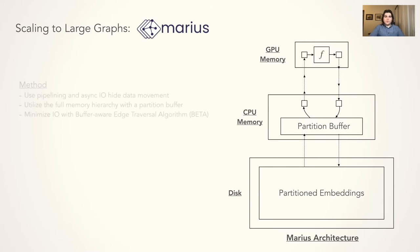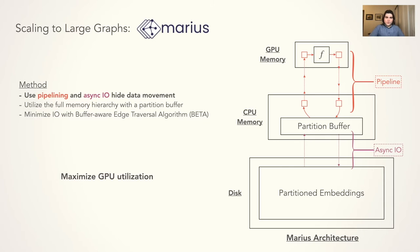Here we can view our contributions in the context of the MARIUS system architecture. We use pipelining to saturate the GPU with batches of edges and embeddings from CPU memory. We also use asynchronous I/O to prevent any wait times due to partition swaps. These allow us to maximize GPU utilization through the elimination of wait times. These components are highlighted on the diagram on the right.